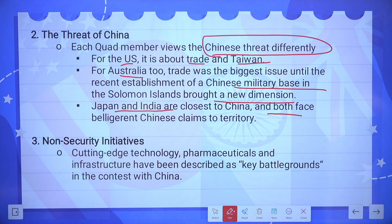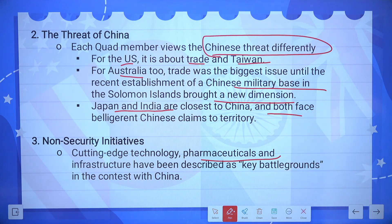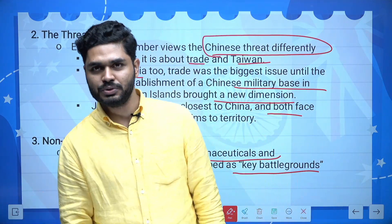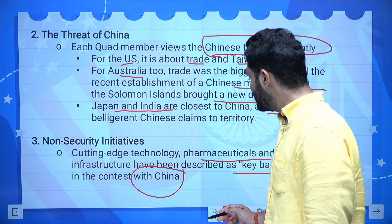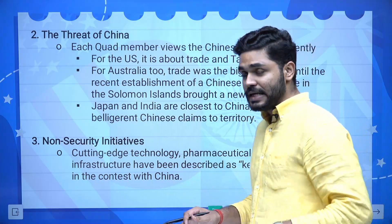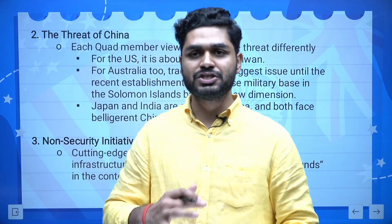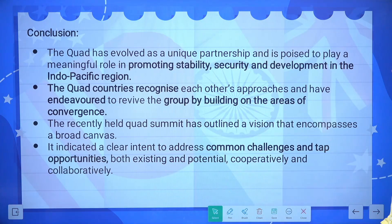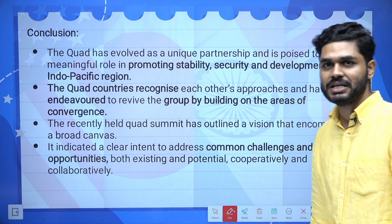Third challenge is non-security initiatives. Cutting-edge technology, pharmaceuticals and infrastructure have been described as the key battlegrounds in the contest with China. These are the new tools. By being on the same page and being part of a group, there is a chance to beat China in these areas — that is why it has been said in the conclusion.